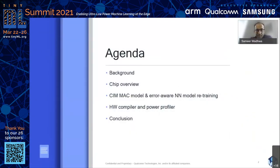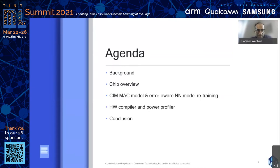I want to structure this by first giving some background on why compute-in-memory and why we want to look at this direction for TinyML. Then I'll talk about the chip overview, the main features and capabilities, the model mapping flow, error-aware model retraining for hardware non-idealities, and then the tools that come with this chip — a compiler and a power profiler that help you get early estimates for power numbers and execution times.